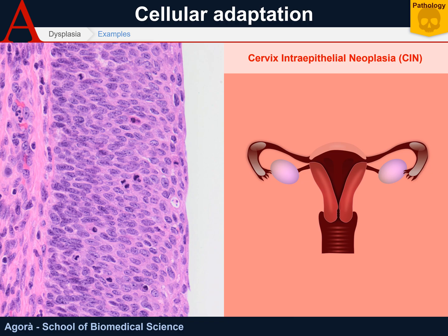Grading of this condition is given by a three-level scale. CIN1 refers to a condition where basal cells involve the basal third of the epithelium. CIN2 refers to basal undifferentiated cells in about two-thirds of the epithelial layer. While CIN3 refers to a condition where the entire epithelium is composed of undifferentiated cells. In CIN3, we can talk about in-situ carcinoma — a real cancer that hasn't started to invade other areas yet.